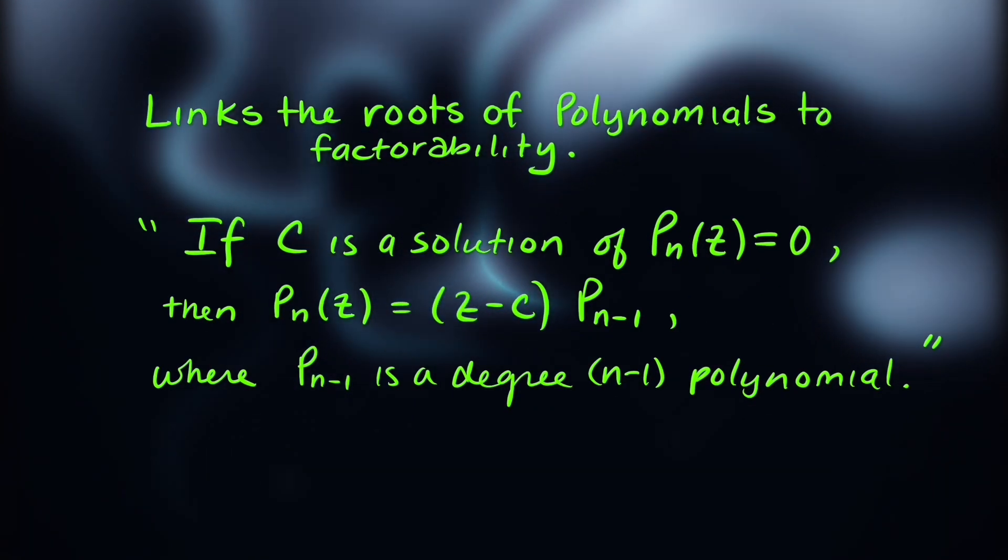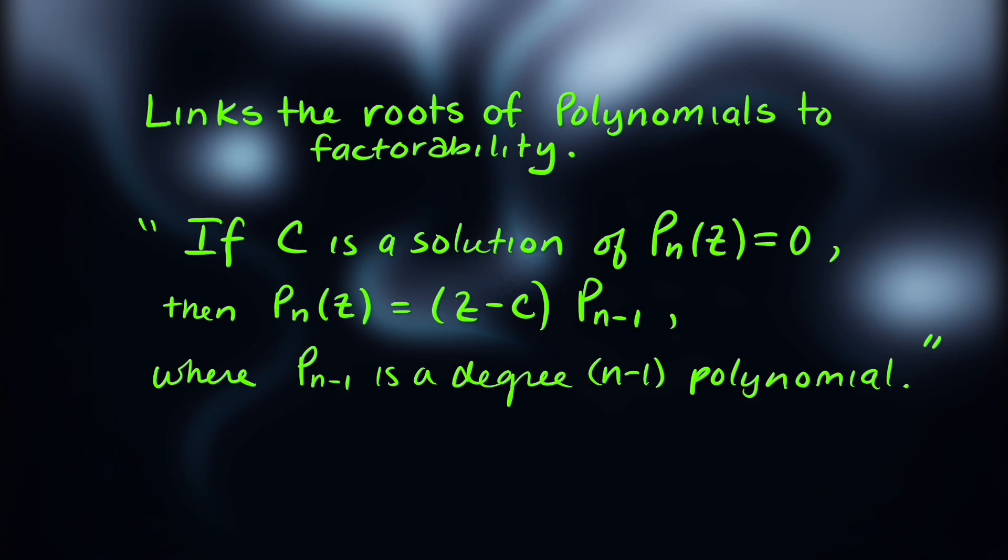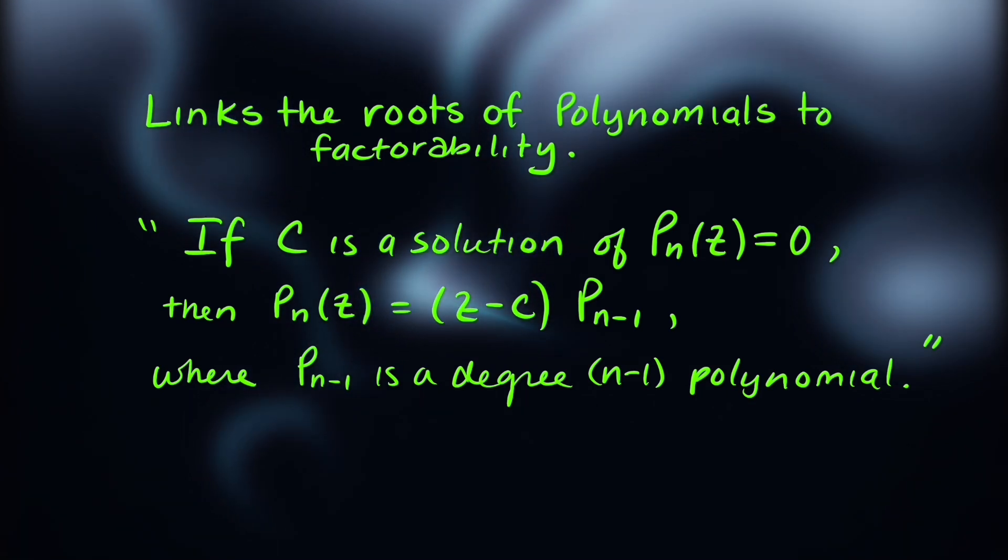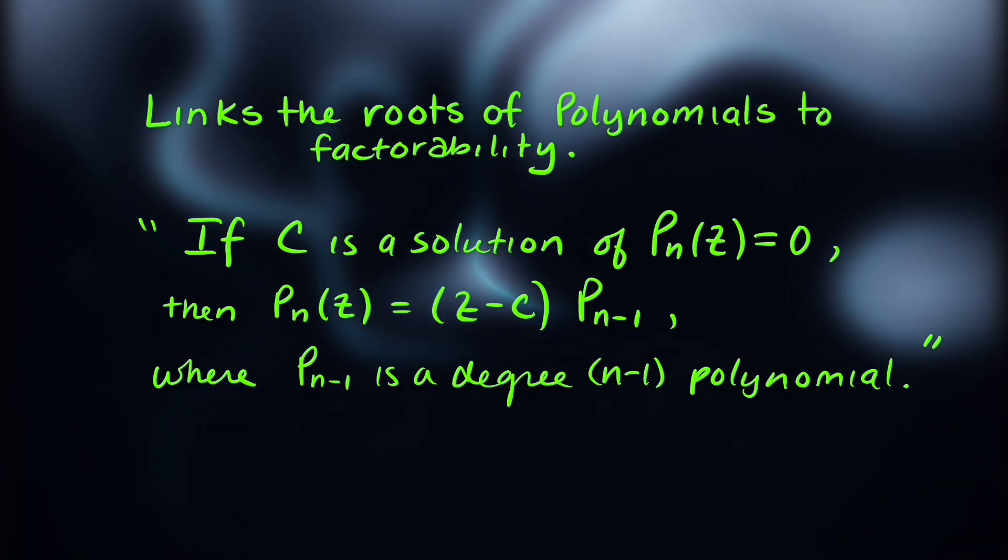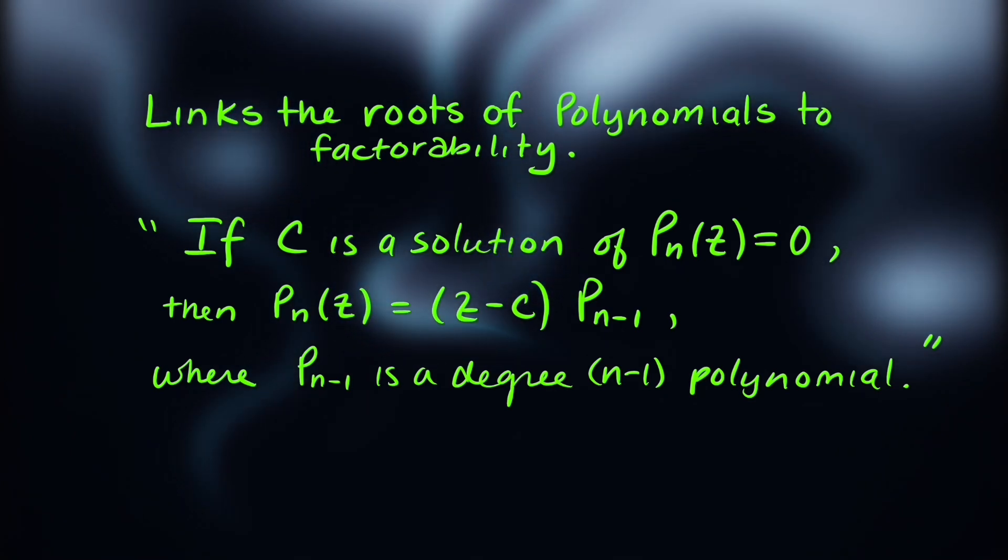What Descartes realized was that every linear factor would reduce the polynomial down by one degree, and that that process could be continued until the entire polynomial was factored.